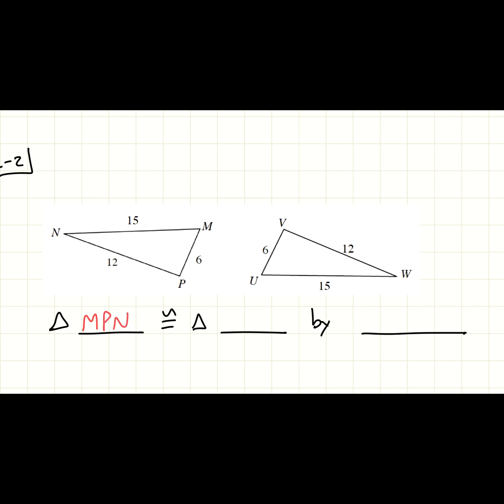And now I need to match this with the other triangle. So let me do the same thing. So 6, 12, 15. So U, V, W. U, V, W.